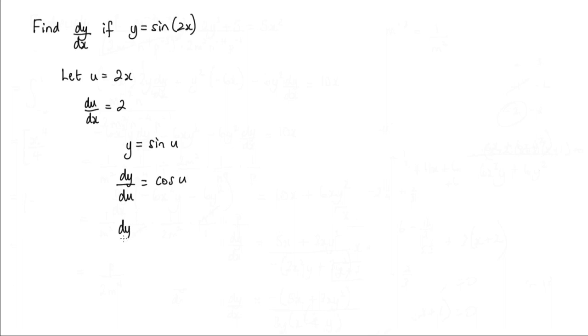So dy by dx using the chain rule is dy by du times du by dx.